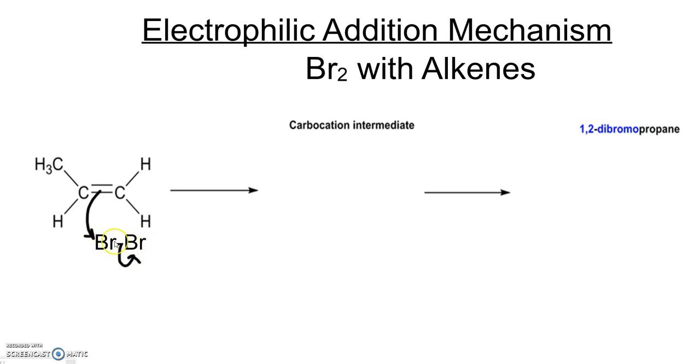So now we get ourselves our carbocation intermediate. When drawing our mechanisms we always draw the most stable carbocation and that is the carbocation which has the most number of alkyl groups attached to it. So in the case of this molecule here, put the positive charge on the carbon which is attached to two other carbons.